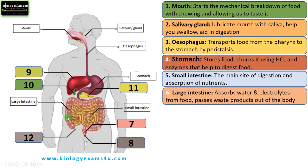The large intestine absorbs water and electrolytes from food and passes waste products out of the body. It also absorbs vitamins produced by enteric bacteria, stores waste products, and eliminates waste products from the body.